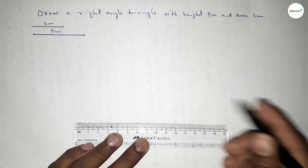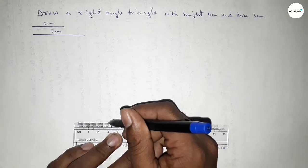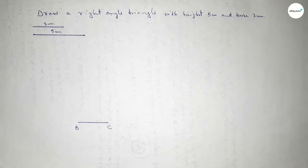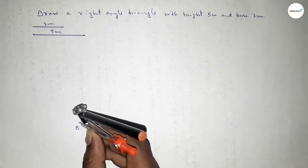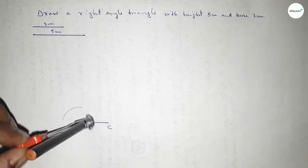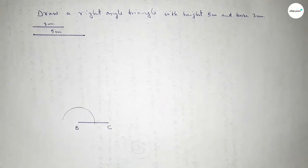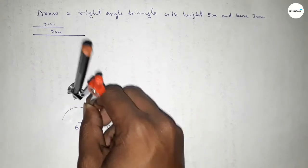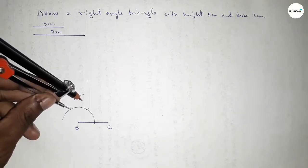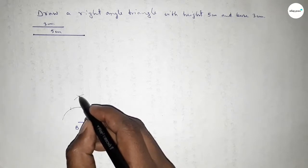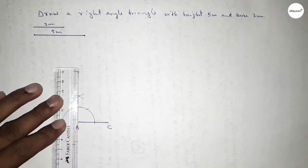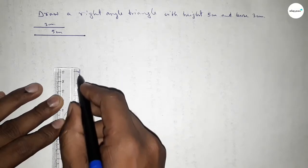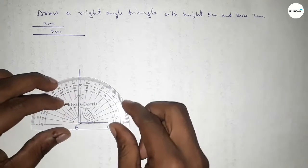The line of length 3 centimeters is the base. Taking point B here and point C here. Now we have to draw a 90 degree angle at point B. Putting the compass at B and drawing an arc, then placing the compass and cutting here, and again cutting here. Drawing another arc with the same length and cutting again. Joining this side to get the 90 degree angle. Checking — this is perfectly 90 degrees.